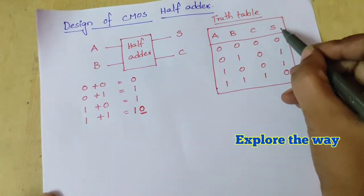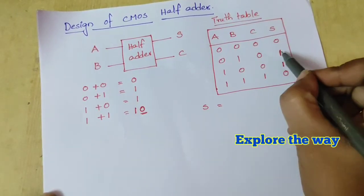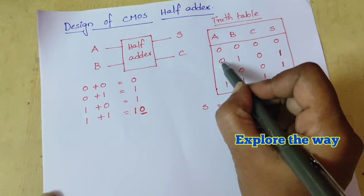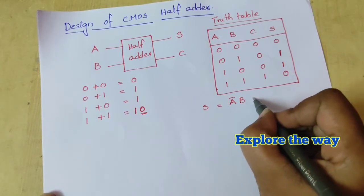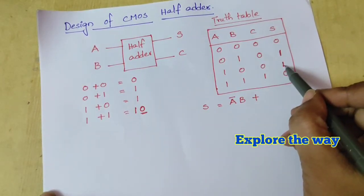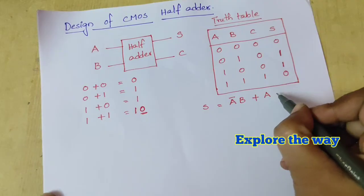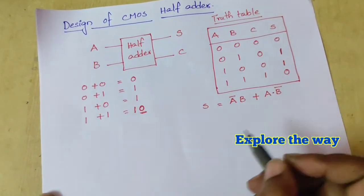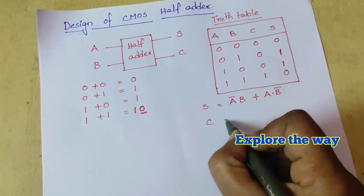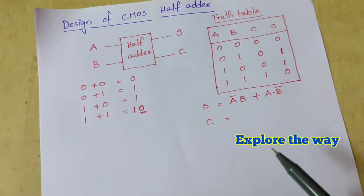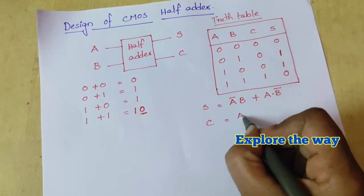From the truth table, the sum output S equals 1 for two combinations: when A=0 and B=1, giving A-bar·B, and when A=1 and B=0, giving A·B-bar. So S = A-bar·B + A·B-bar. The carry output is 1 for only one combination — when both inputs are 1 — so carry C = A·B.